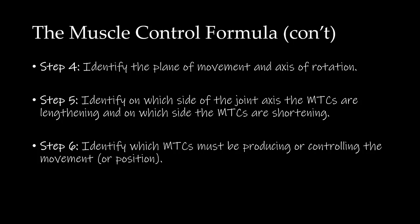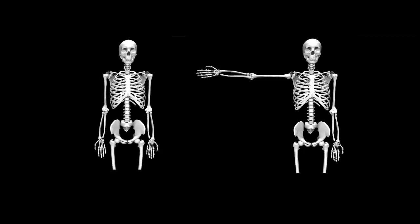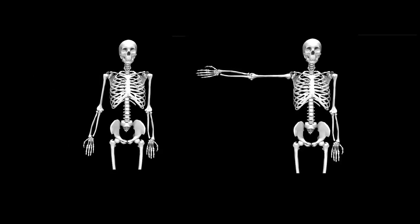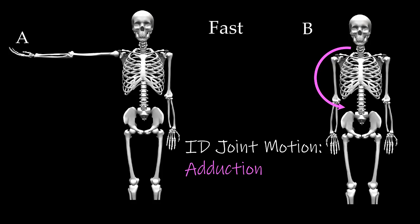Step 1 is to identify the joint movement or position. I would ask you to consider the video on the left — we saw this same video when we looked at an example for eccentric MTC actions. Now, let's contrast that with the video on the right, which shows a rapid downward movement of the arm compared to the slow controlled movement on the left. Going from position A to position B quickly, the action is a downward rotation of the arm. The joint motion involved would be glenohumeral adduction, and from our perspective, this would be a counter-clockwise rotation.